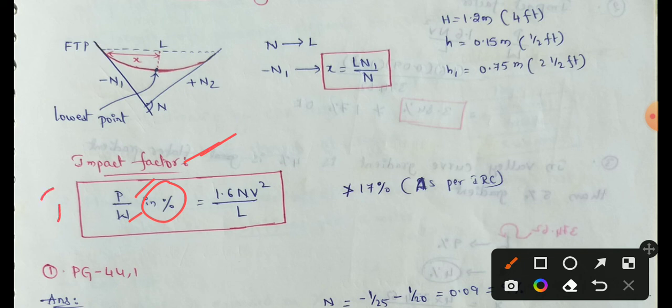Impact factor I = P/W in percentages. The formula is P/W = 1.6 × N × V² / L.